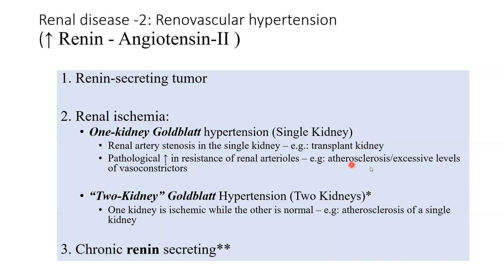This single kidney is not receiving its allotted blood flow — which in a single kidney means a lot, because it must compensate for the absent kidney as well. Decreased blood flow causes renal ischemia, causing more renin, more angiotensin 2, and more hypertension. One-kidney Goldblatt hypertension is basically renal ischemia in a single kidney and its attendant hypertension.